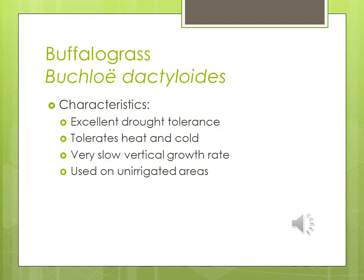Buffalo grass: excellent drought tolerance, tolerates heat and cold, a very slow vertical growth rate, used on unirrigated areas. It can withstand drought, likes hot and cold conditions, doesn't need to be mowed much, and can be planted where there is no irrigation. It's used a lot in the Midwest where temperatures go to extremes. It seems like the perfect grass and would be good to see used more in this area.